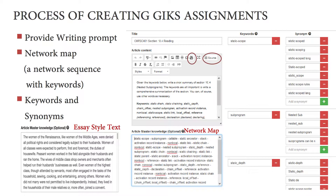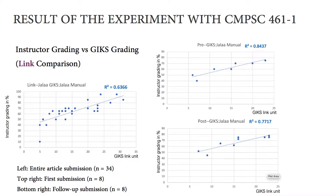You might want to ask: how good is GICS grading? In other words, how close is GICS grading when compared to the instructor's grading? The left graph shows that, with 34 submissions, when we do the links comparison, R-squared is 0.6366.